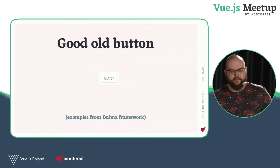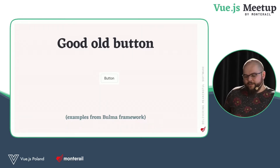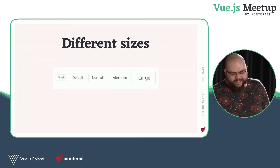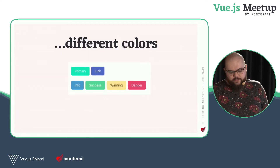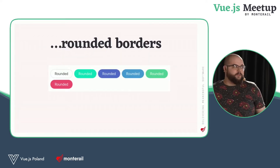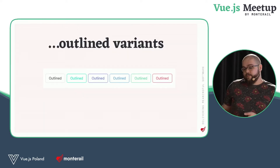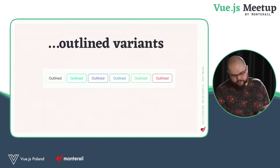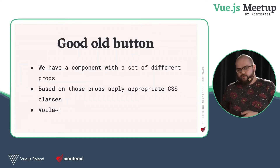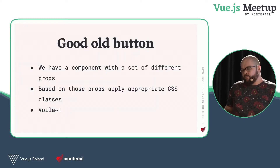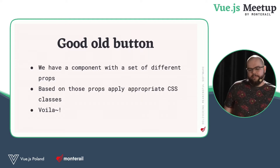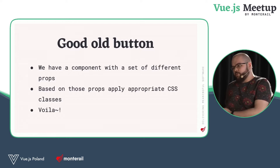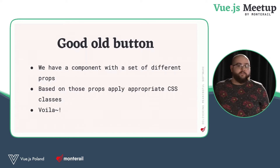A good example of that is a good old button. Buttons can be quite customizable — you'll have different sizes, different colors, different rounded borders, different border sizes, and the colors might have outlined variants. That's quite a bit of customization. But the truth is, it's very simple and the problem is solved. What you do is create a component, map out props for the different visual properties like the size, the color, the border, and based on those props, you just pick and choose classes. Voila, you have a button. That works.